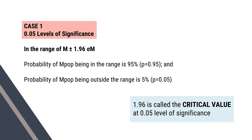In the range M plus or minus 1.96 sigma-m, the probability of the population mean being in the range is 95% — that is, probability is 0.95 — and the probability of the population mean being outside this range is 5%, that is, p is equal to 0.05. The value 1.96 is called the critical value at the 0.05 level of significance.